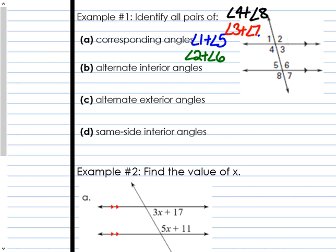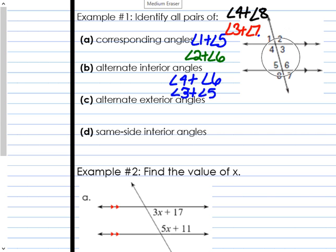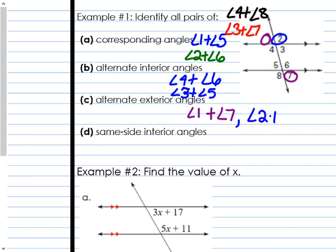Our next step is alternate interior angles — you should have two pairs. Alternate means opposite sides, so four and six are alternate interior. The other pair would be angle three and angle five — alternate interior, inside but on opposite sides. Next, we have alternate exterior. Exterior means outside, so angle one and angle seven are alternate — one is outside on one side, seven is on the other side of the transversal. And then angle two and angle eight are the second pair of alternate exterior.